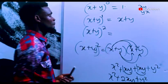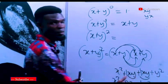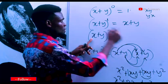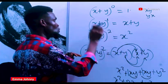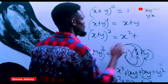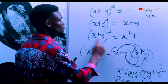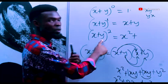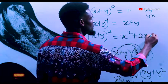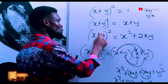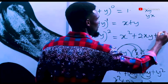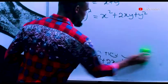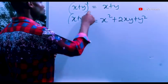Now let me show you a very simple way to expand without going through this long method. Just use the power two to square x — so you have x raised to power two. Then use this power two to multiply the two terms inside the brackets: two times x times y gives you plus two xy. Then the last thing is use this two to put on top of y, giving you plus y squared. This is the same result as before. So if you expand x plus y raised to power two, this is what you will get.